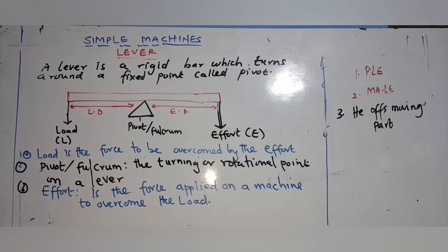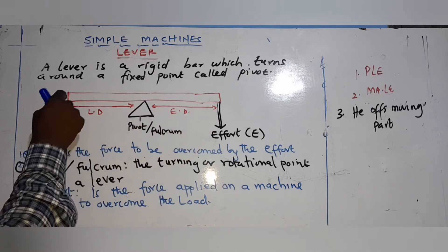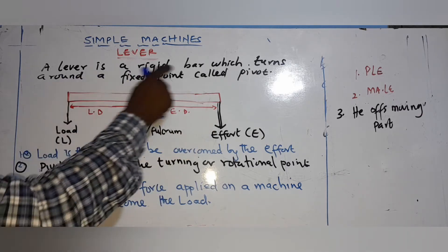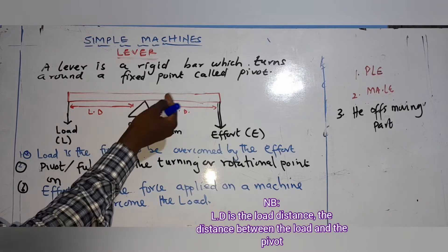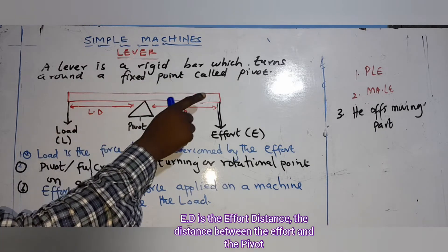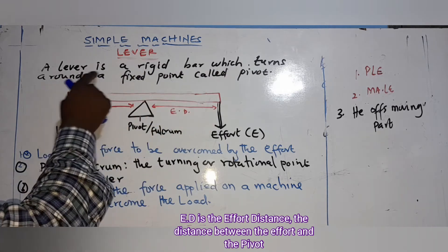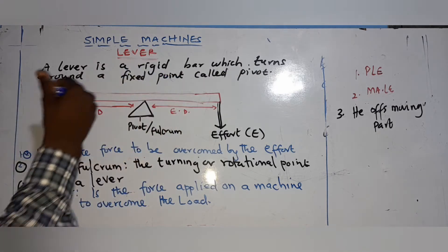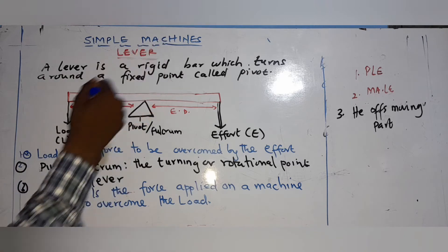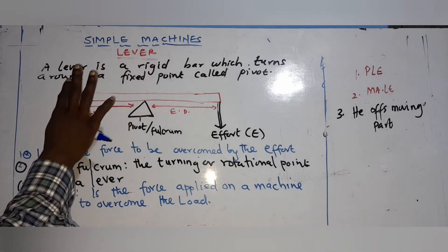A lever is a rigid bar which turns around a fixed point. So if you have to define lever: a lever is a rigid bar which turns around a fixed point called a pivot. Note that 'liver' — spelled L-I-V-E-R — is an organ in the human body; that is different from this lever, which is a simple machine.